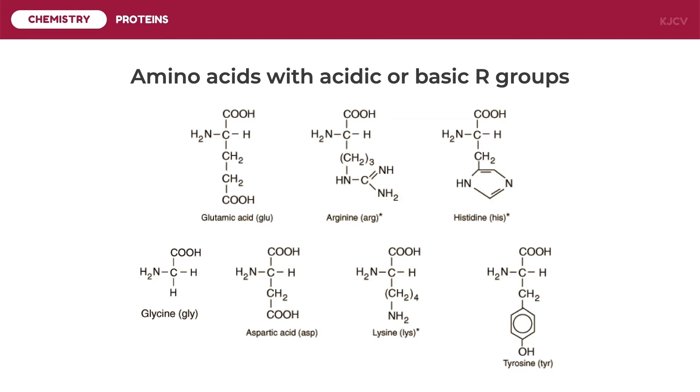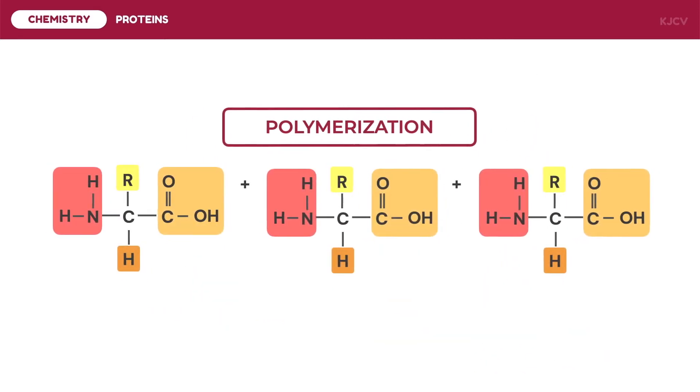These 20 amino acids form polypeptide chains or the polymers of proteins. In the polymerization process of proteins, dehydration or the formation of water molecules from the amino acid components will be the main driving mechanism.